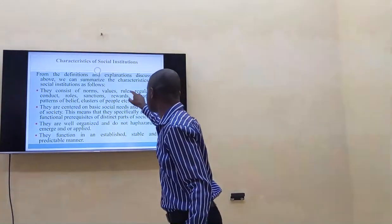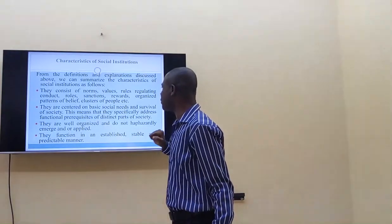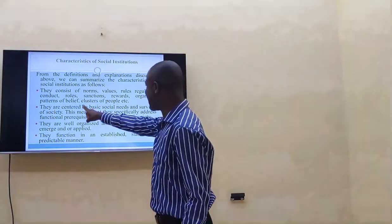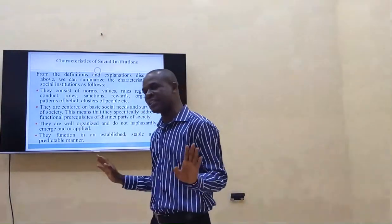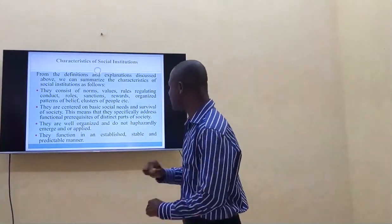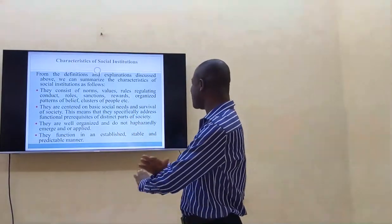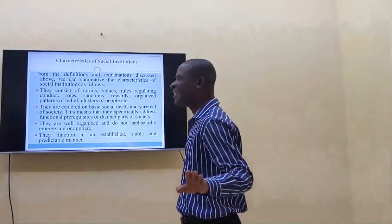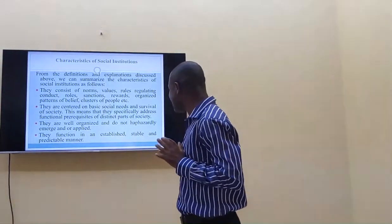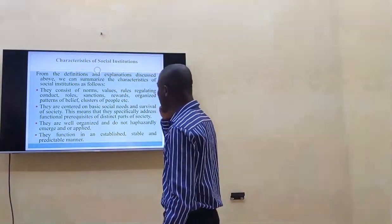Social institutions consist of norms, values, rules, sanctions, rewards, organized patterns of belief, and closeness of people. Number two, they are centered on basic social needs and the survival of the society — they specifically address functional aspects of society. They are well organized, they do not operate in a haphazard manner. They function in an established, stable, and predictable manner.